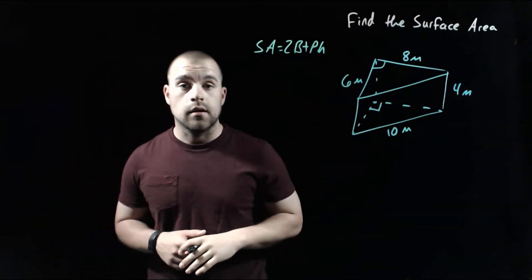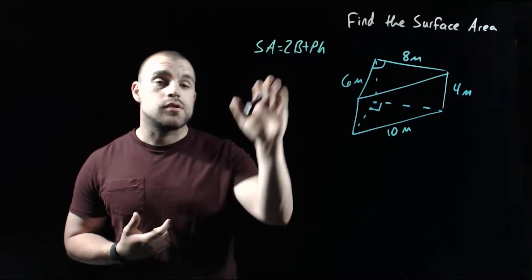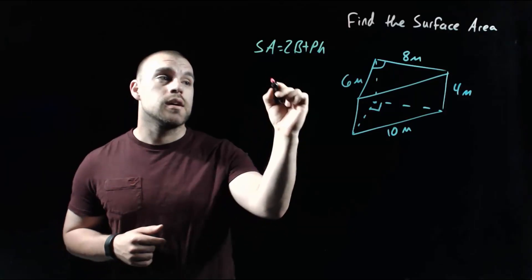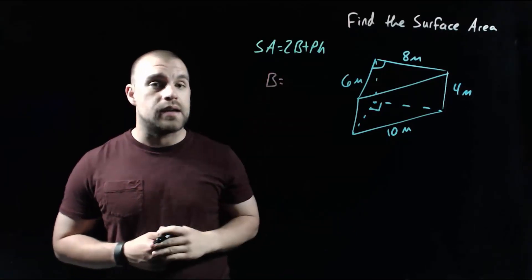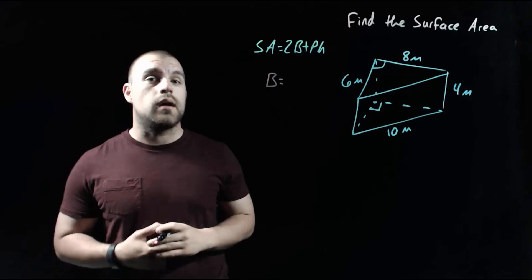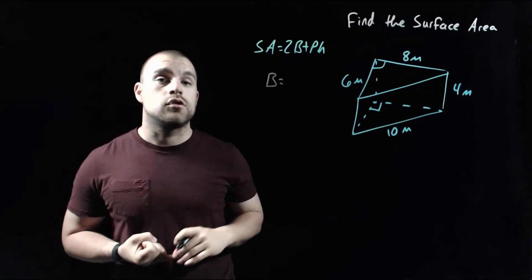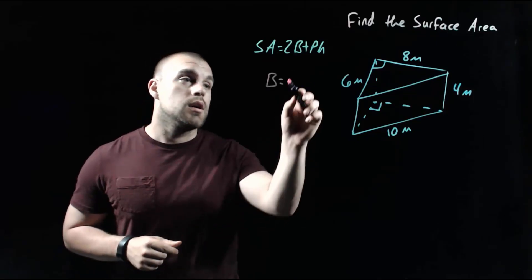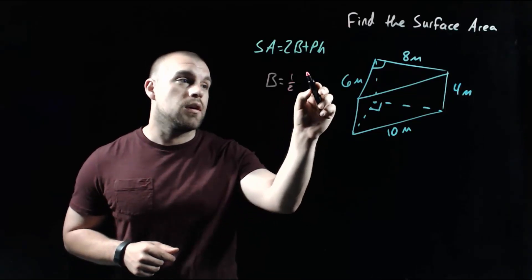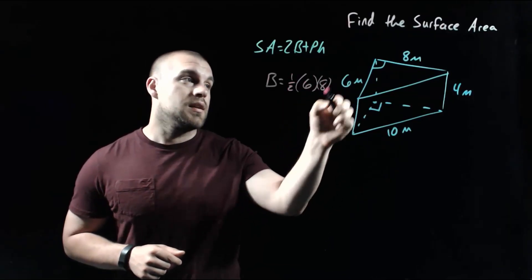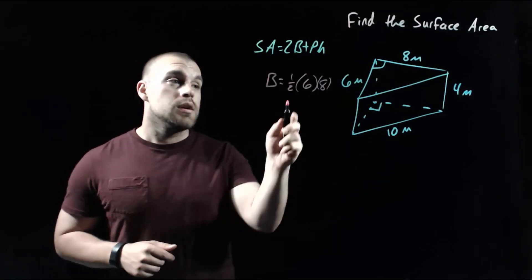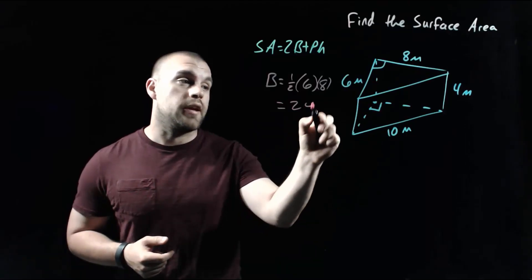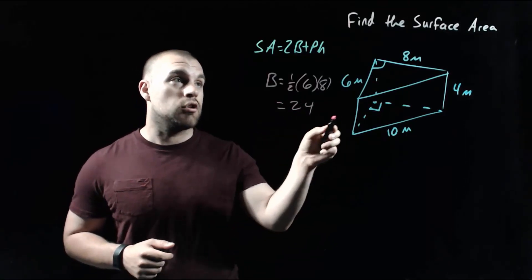In this example, we've got a triangular prism. As far as finding the surface area, the formula is exactly the same — 2 times the base plus the perimeter times the height. Let's first find the area of the base. Since we're looking at a triangle, remember the area formula is one-half times the base times the height, where the base and height make a right angle. So we take one-half times 6 times 8. Half of 6 is 3, and 3 times 8 is 24. So we've got 24 as the area of the triangular base.